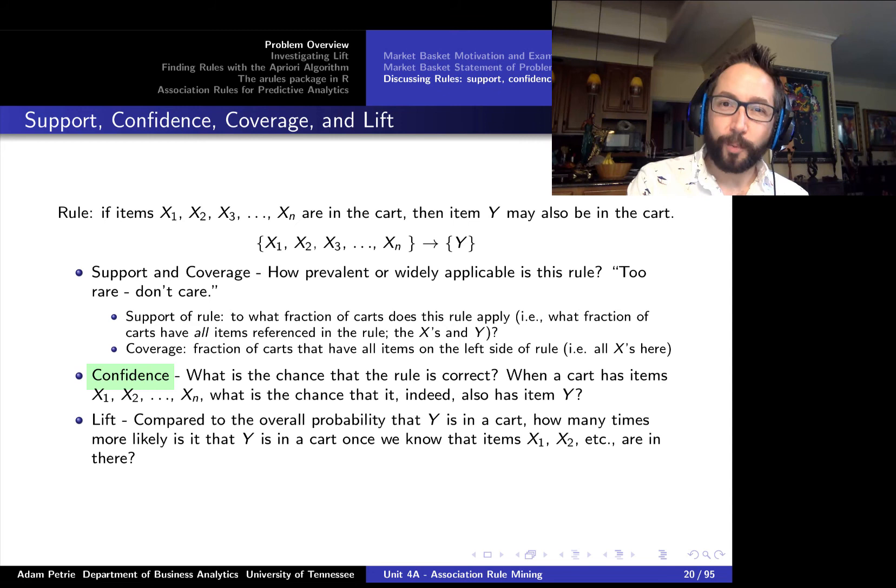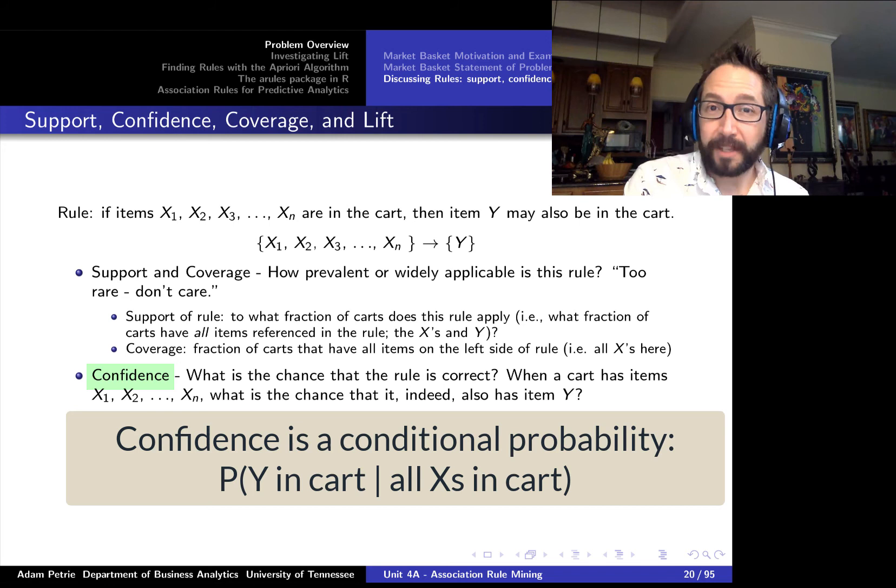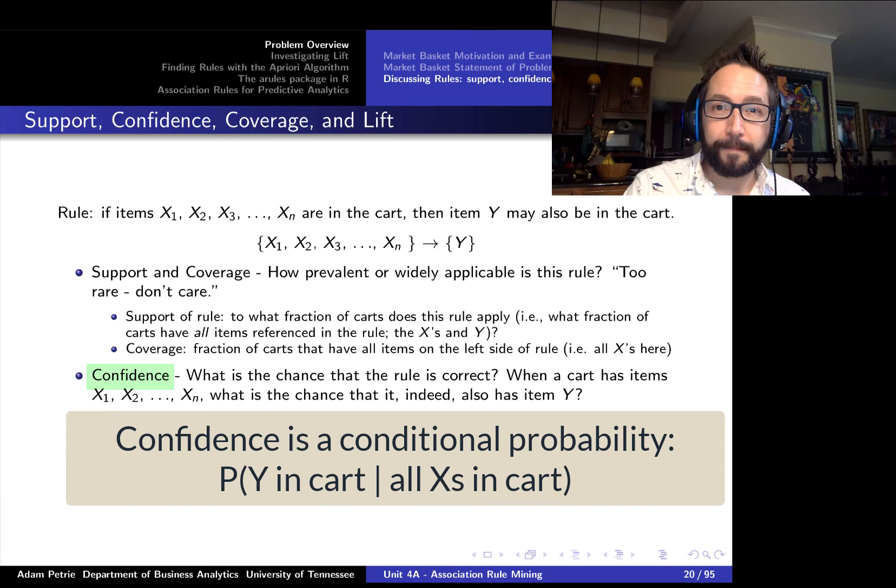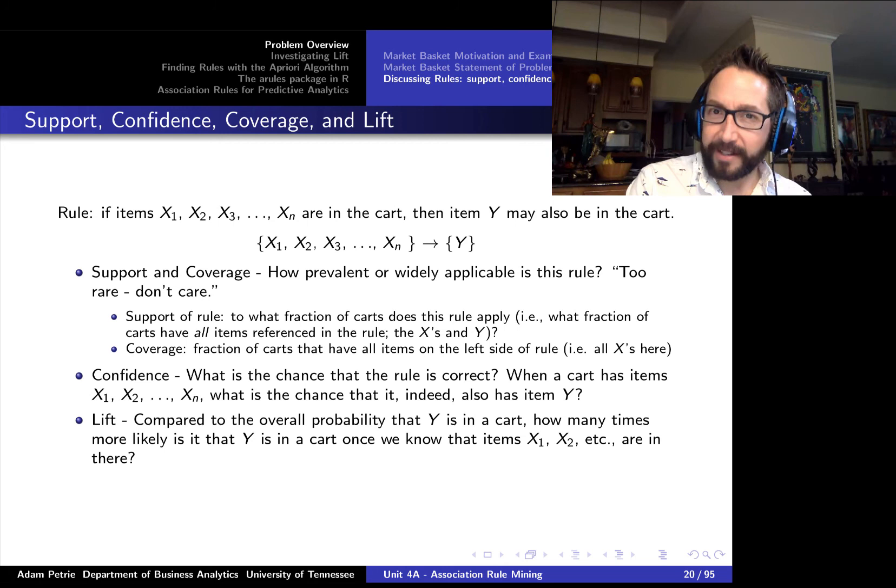Now, when we do discover these rules, we're going to talk about how confident we are in these rules as well. How often do these rules apply? And the confidence is just going to be the probability that a shopper has item y in their cart, given that they have that combination of items that appear on the left-hand side, that combination of the x's. So the confidence is, you know, given that a cart has those items, what's the probability that it also is going to have item y?